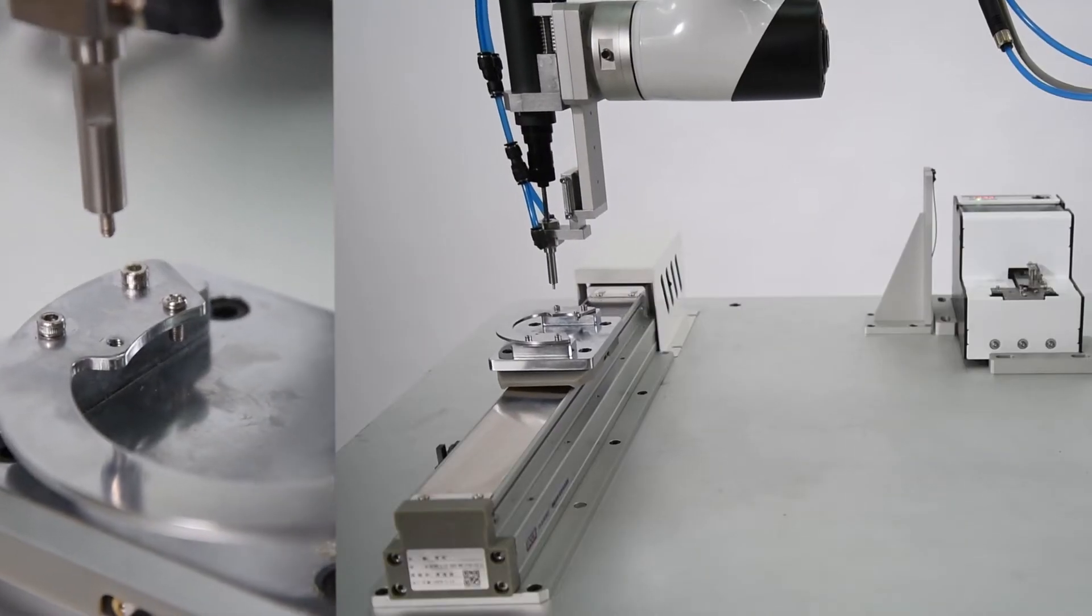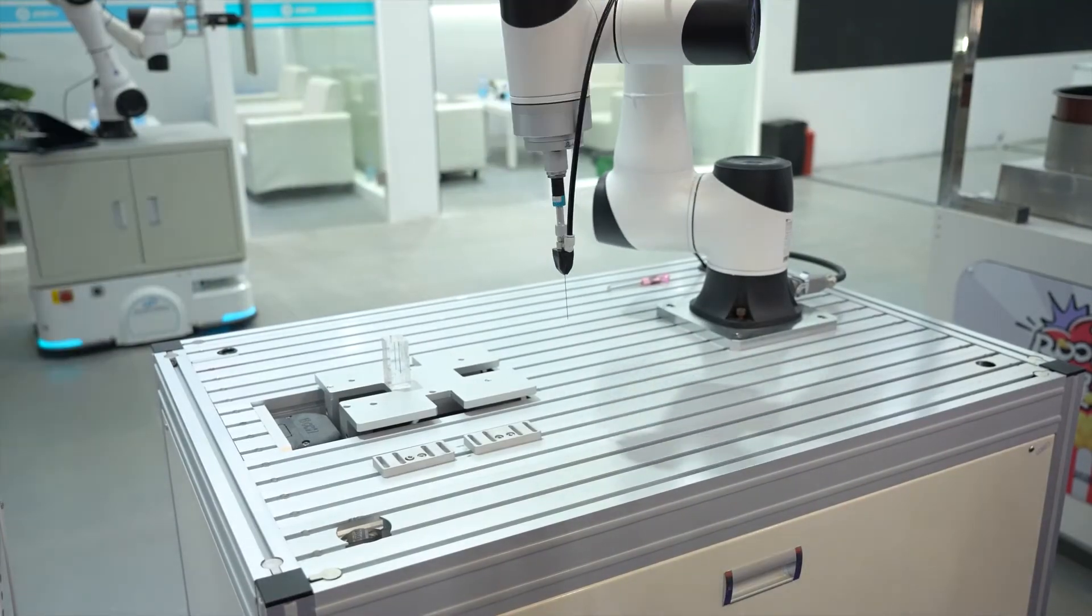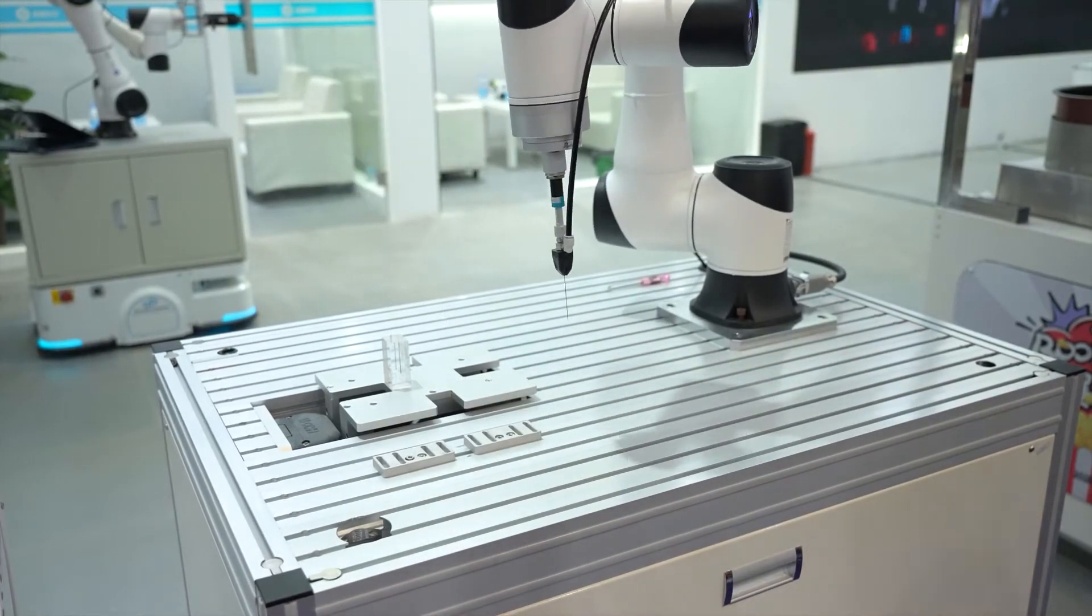When an end effector such as a welding gun or a gripper is mounted on the robot, you can set up to 10 tool coordinate systems to more easily program positions and orientations.